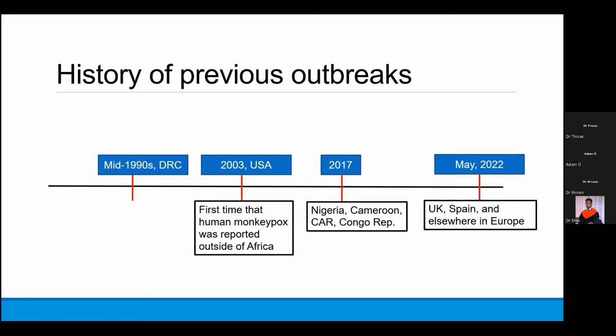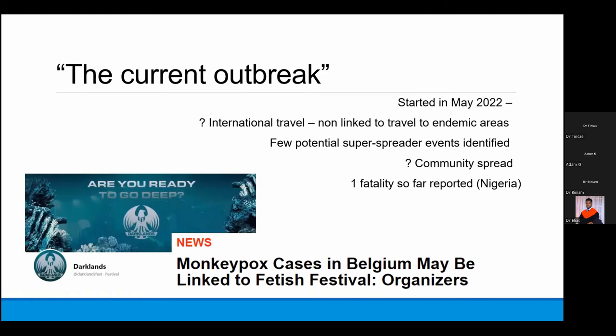As in most cases, the media only started to notice when cases occurred outside Africa — when this current group of patients was diagnosed in Europe, from the UK, Spain, and other EU countries, starting from May 2022. The current European outbreak started in May 2022. There were few cases with international travel history, and a few super-spreader events have already been identified, with research continuing.